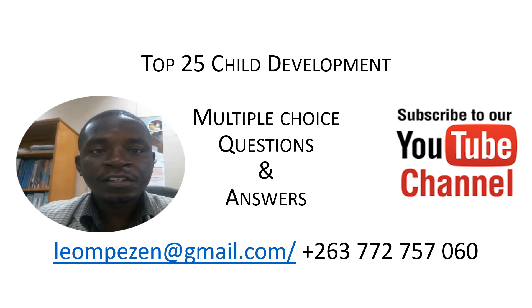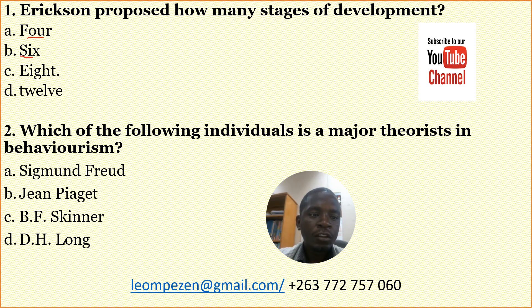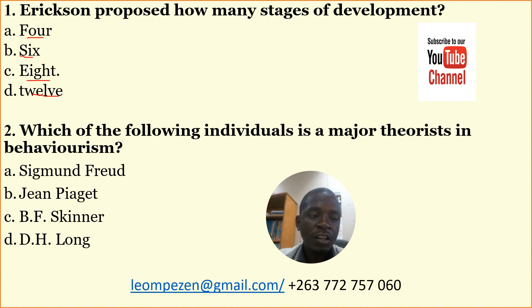Number one: Erik Erikson proposed how many stages of development? A: 4, B: 6, C: 8, D: 12. Remember, Erik Erikson is a developmental psychologist and he proposed eight stages of development.